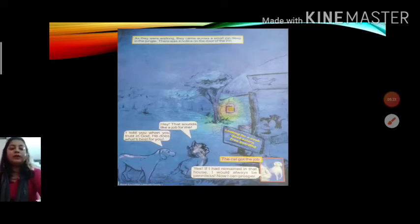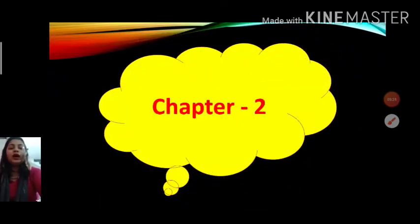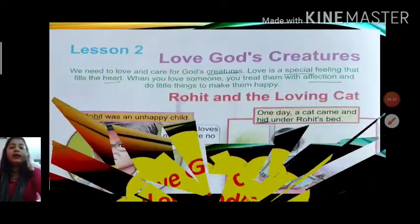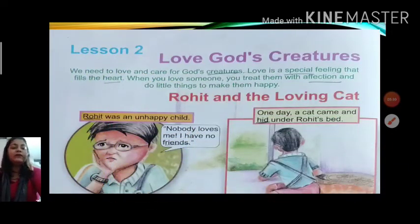Now come to the next chapter, that is Chapter 2 and the name of the chapter is Love God's Creatures. Yes children, you all are knowing God has created this universe. So what should we do? We need to love and care. We need to love and care for God's creatures. Because love is a special feeling that fills the heart. When you love someone, you treat them with affection or do little things to make them happy.